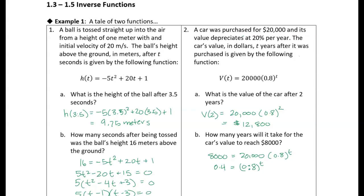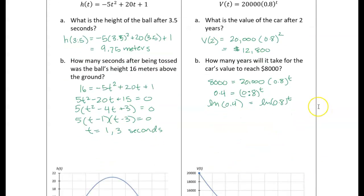To solve this we use logarithms. Taking the natural log of both sides allows us to bring t out front, giving ln(0.4) = t × ln(0.8). Solving for t: t = ln(0.4) / ln(0.8), and putting that into the calculator gives approximately 4.1 years.